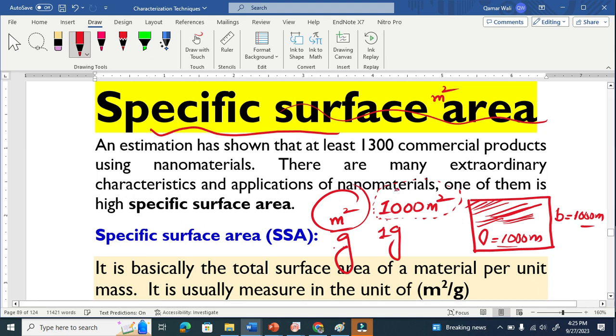So this means that if we have higher surface area, more reactions, more reactivity. Specifically good for catalysis.